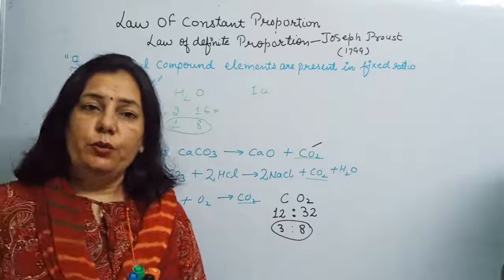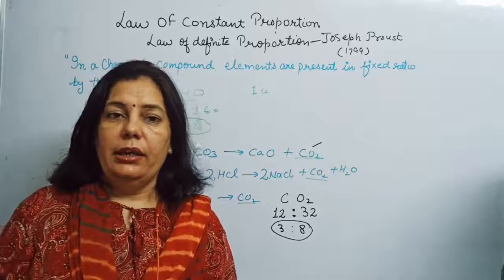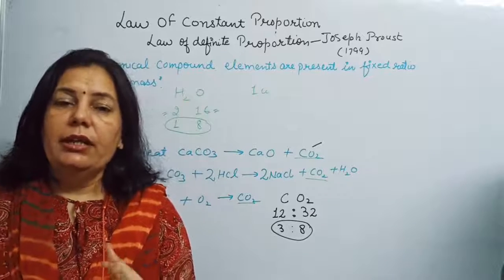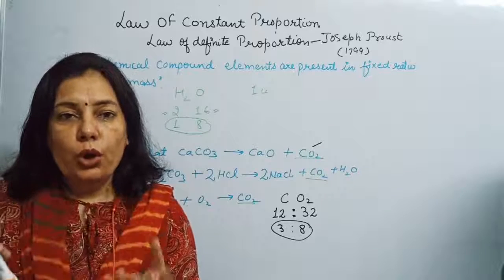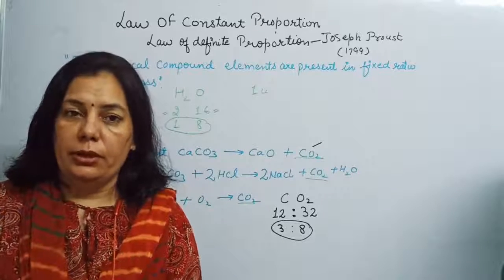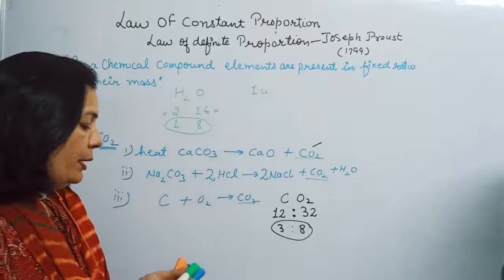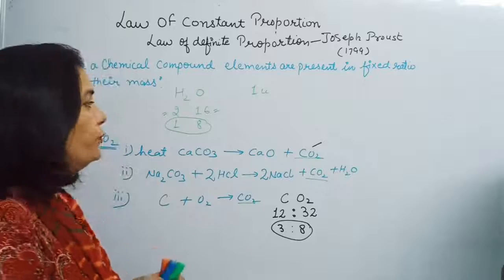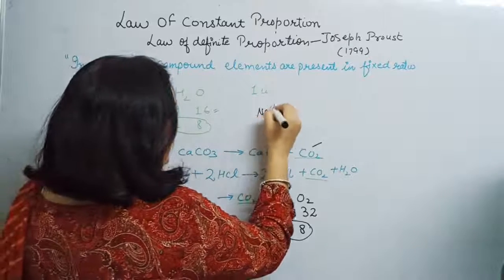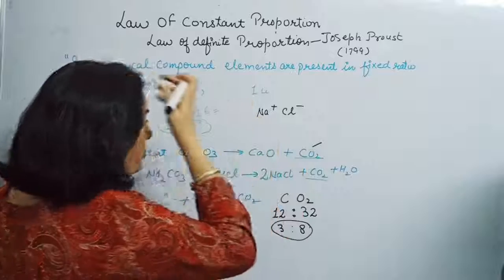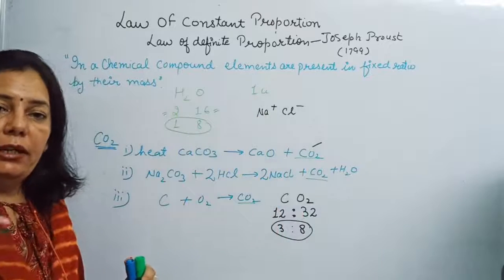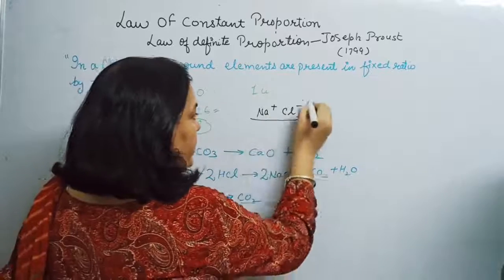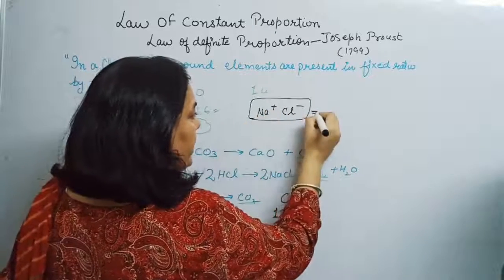The second application relates to ionic compounds. In an ionic compound, ions are present in such numbers that the overall ionic compound becomes neutral. For example, sodium chloride is an ionic compound formed by Na+ and Cl−, and the number of ions present must be such that the overall electric charge becomes neutral.